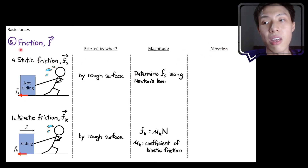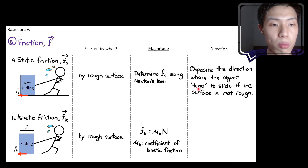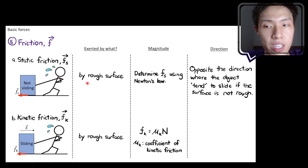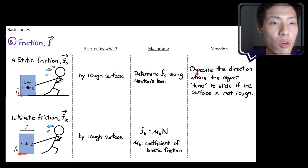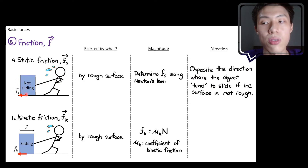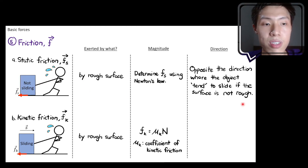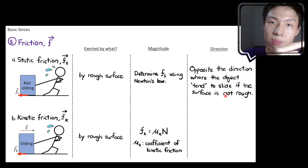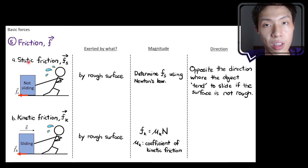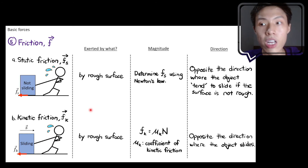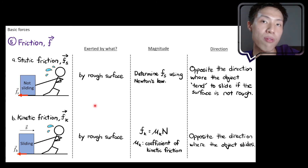For direction: static friction acts opposite to the direction where the object tends to slide if the surface were not rough. If the object tends to slide to the right, static friction points to the left. For kinetic friction, it is opposite to the direction where the object actually slides. If the object slides to the right, kinetic friction points to the left. These are the five kinds of forces you may observe in a macroscopic situation.